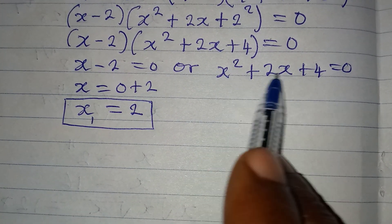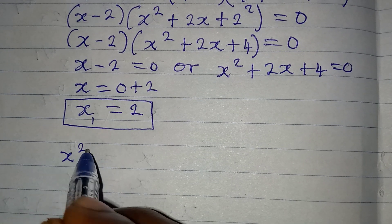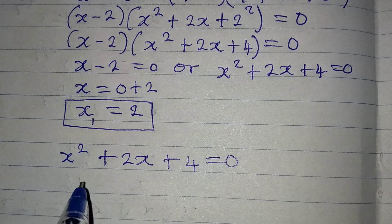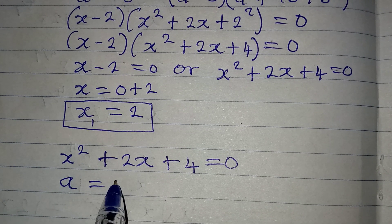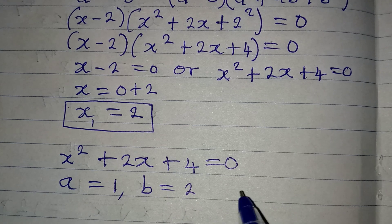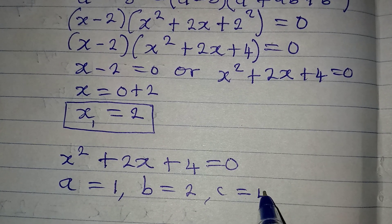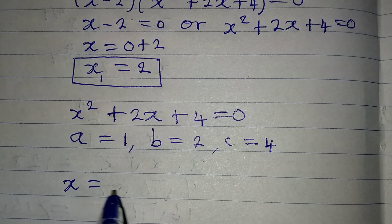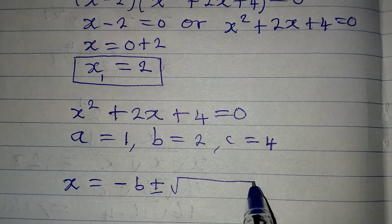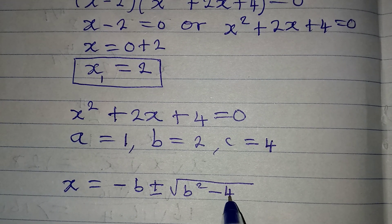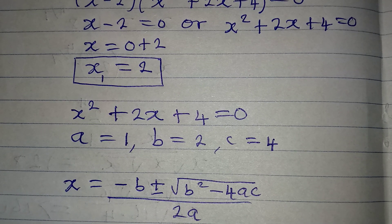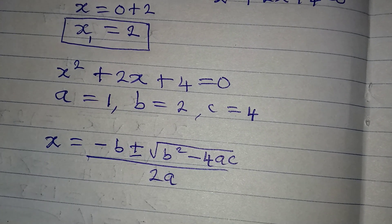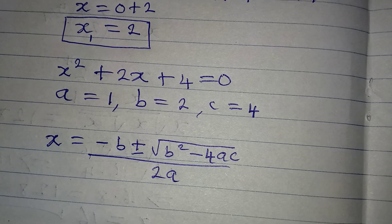Now let's go after x₂ and x₃ from the quadratic equation x² + 2x + 4 = 0. Here a = 1, b = 2, and c = 4. The quadratic formula is x = (−b ± √(b² − 4ac)) / 2a. This formula can also be derived using the completing the square method if you ever forget it.